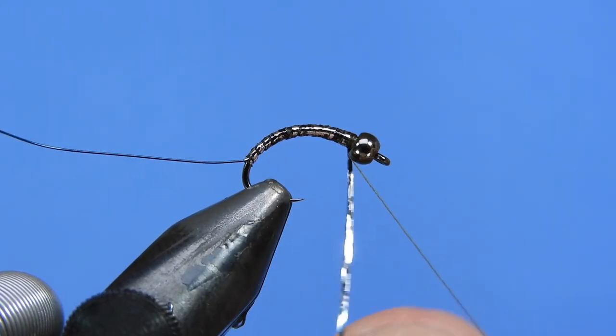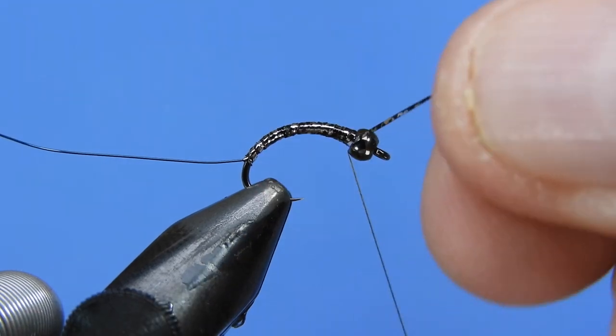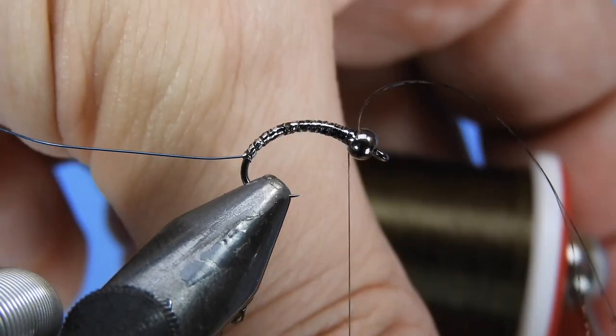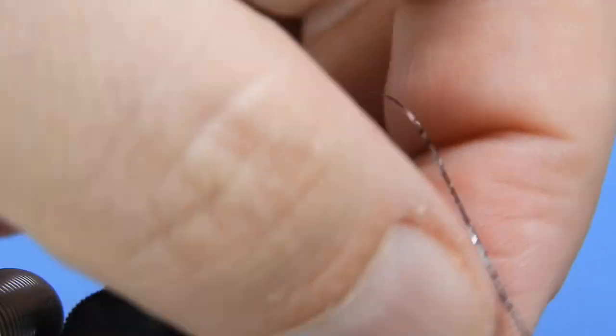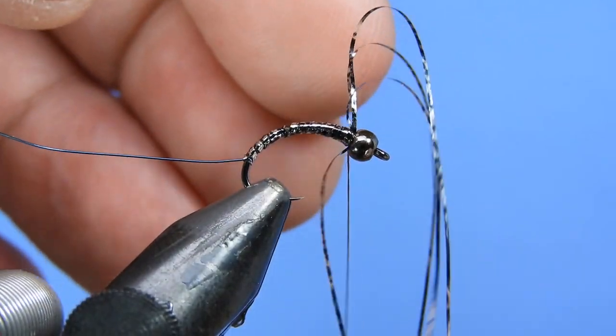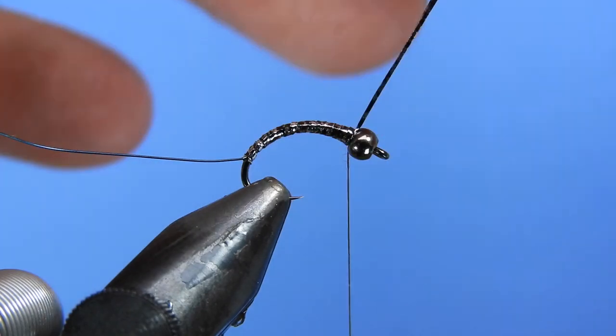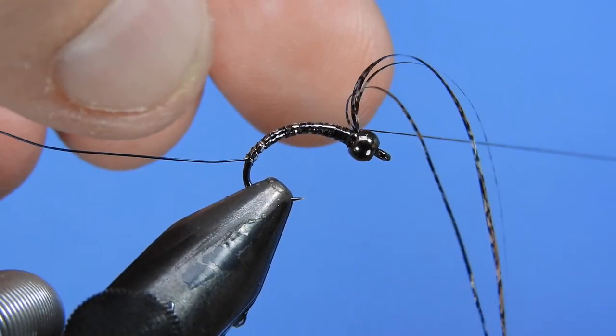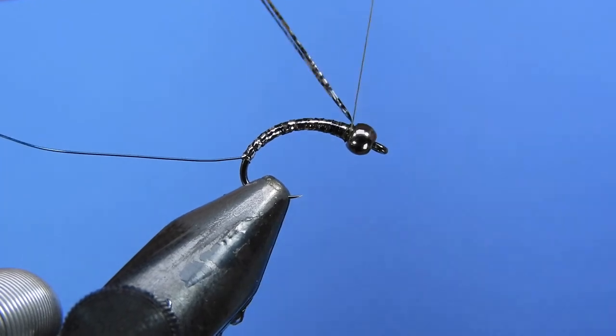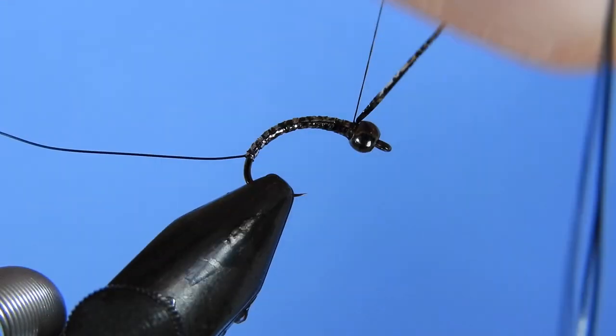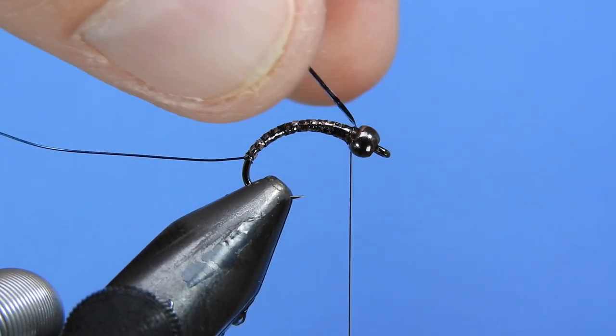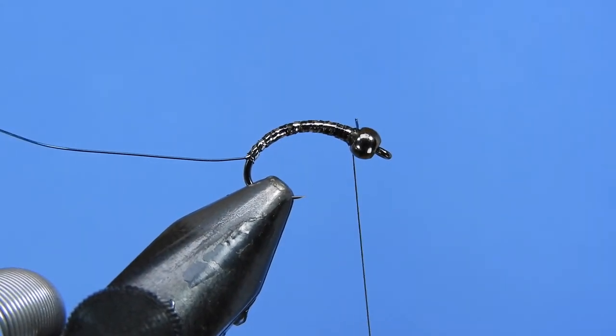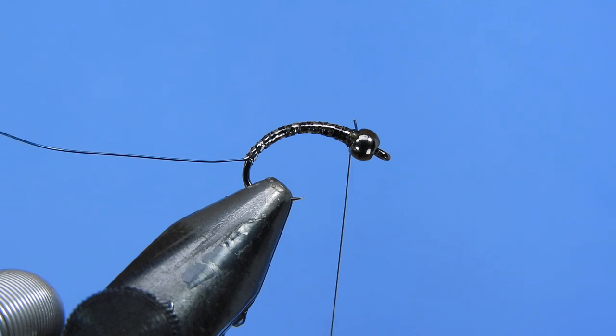So wrap that just in behind the bead and then we'll take our thread. We'll add some wraps to secure that, making sure that we go both in front of the bead and behind the bead or behind the tinsel just to make sure that it's locked in place. And then when you're comfortable with that, we'll just go ahead and trim that off. We'll save that for the next fly.